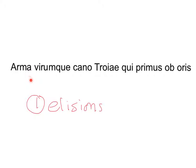The first word ends in A, but the next word starts with a consonant — no elision. The word ending in -que ends in E, but the next word starts with a consonant. The next ends in O, but again a consonant follows. AE, then a consonant. I, then a consonant. S and B are both consonants. I don't have to think about the last syllable because there's no word after it on the line. So I have no elision.